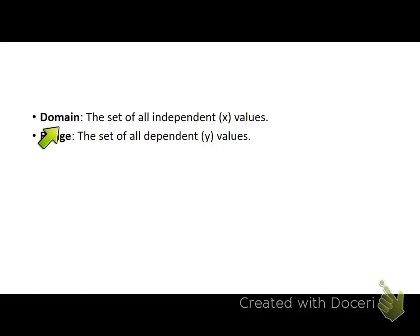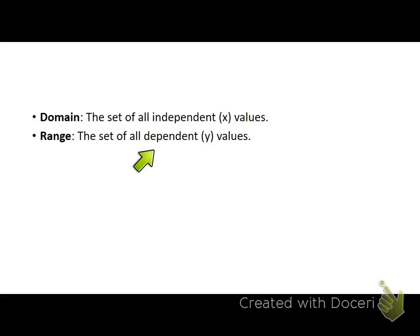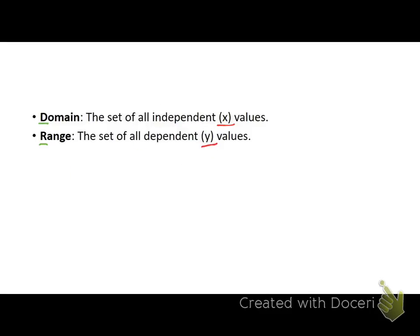To start, we just need to know the definitions of domain and range. These can be represented a number of ways, but the domain is basically the set of all your X values, which is the group of all your independent values of a function. That makes the range a set of all dependent or Y values. You need to have this memorized. If you keep getting these mixed up, just think about alphabetical order — in the same way that X comes before Y in the alphabet, D comes before R in the alphabet. So if you can't ever remember whether domain is Y or X, just think about alphabetical order for both.